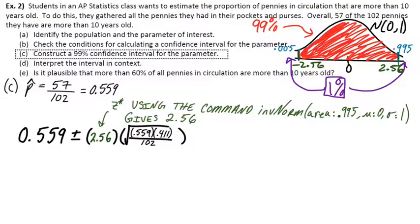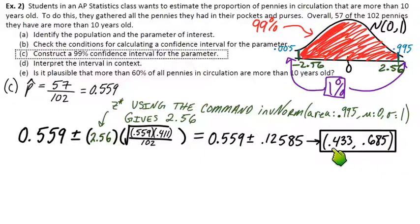Okay so I've got my z-star my critical value now I'm ready to go ahead and crunch this interval. I'm going to start with just getting the margin of error here so if I multiply the critical value times the standard error I get 0.12585 as my margin of error so now I'm just going to add and subtract from 0.559 to get my interval 0.433 up to 0.685.